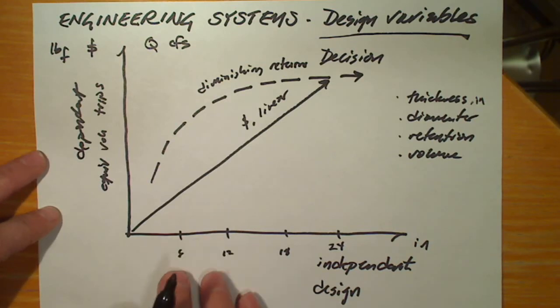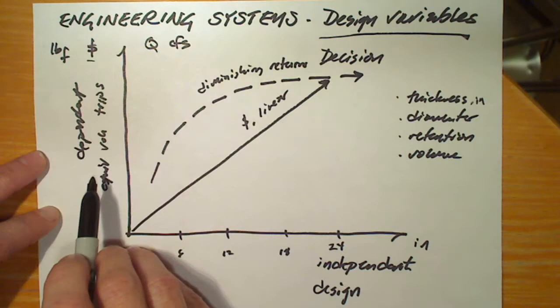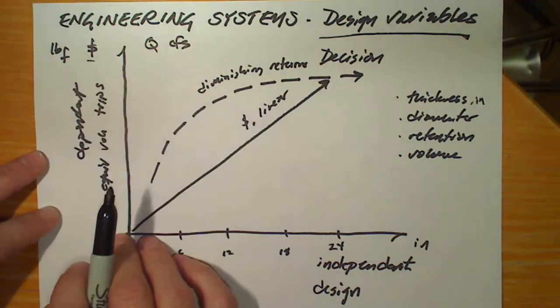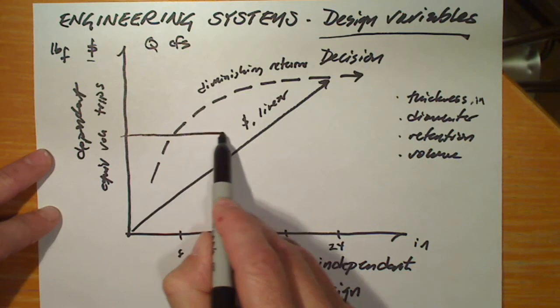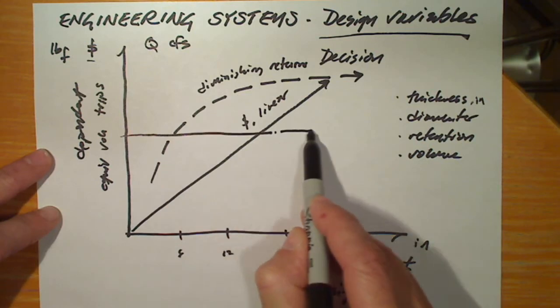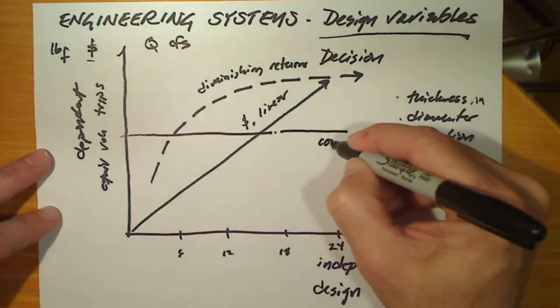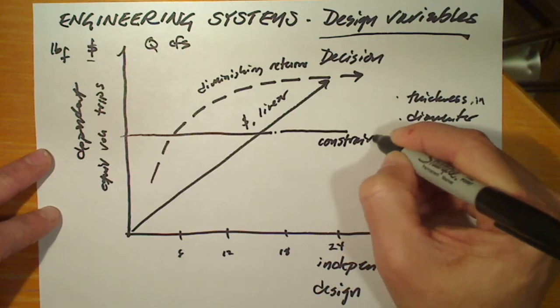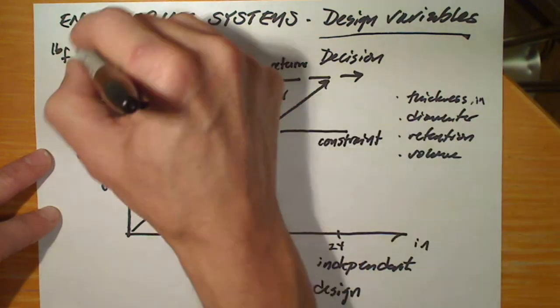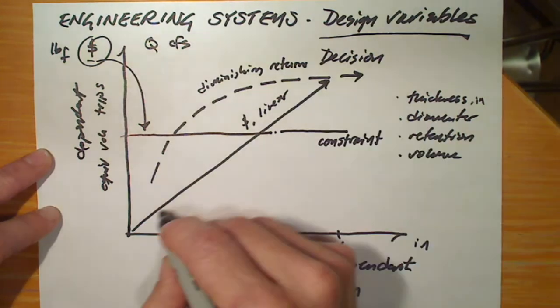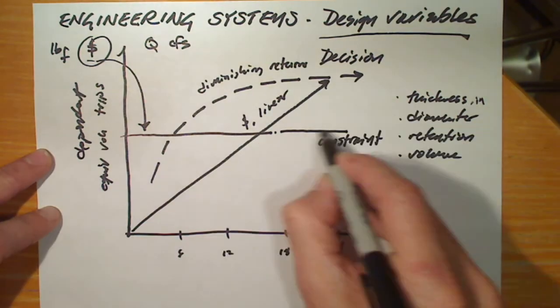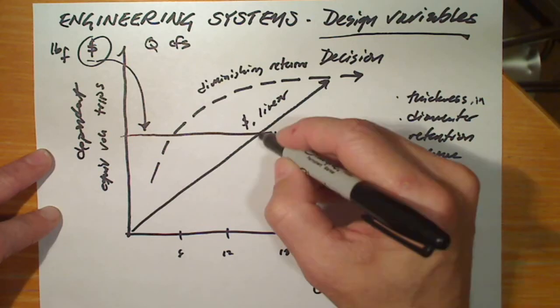Suppose there's some maximum budget under which we must keep the pavement costs. We'll denote the maximum budget like this. This is a constraint that says we don't have any more money than this line, and therefore our cost curve cannot exceed the constraint line.